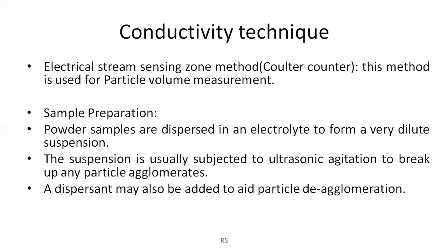The electrical stream sensing zone, or Coulter counter method, is used for particle volume measurement. When a particle suspended in a conducting liquid passes through a small orifice on either side of which are electrodes, a change in electric resistance occurs, and this electric resistance is measured in this technique. For sample preparation, the powder samples are dispersed in an electrolyte to form a very dilute suspension, which is then subjected to ultrasonic agitation to break up any particle lumps.